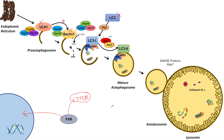FXR can inhibit TFEB, which is the master regulator of lysosomal biogenesis and macroautophagy function, meaning FXR can indirectly suppress many additional targets. So FXR has a major influence on the macroautophagy pathway by suppressing initiating steps, elongation and maturation steps, and also lysosomal biogenesis through its suppression of TFEB.